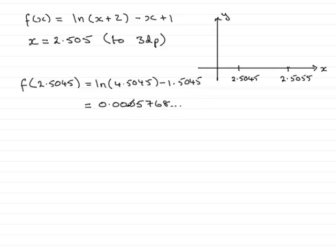Work that out on a calculator and what you find is you've got 0.0005768 and so on. This is a positive value, virtually 0. So, it's above the x axis. I'll put it up here though, even though it's very close to the x axis.